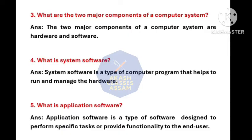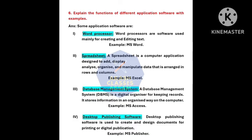Question number four: What is system software? System software is a type of computer program that helps to run and manage the hardware. Question number five: What is application software? Application software is a type of software designed to perform specific tasks or provide functionality to the end user.